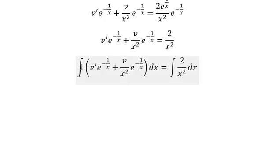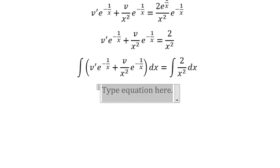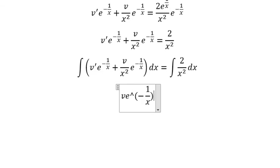So the integral on the left you will got about v multiplied with e to the power of negative 1 over x. On the right you will got about negative number 2 over x plus c.